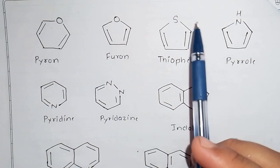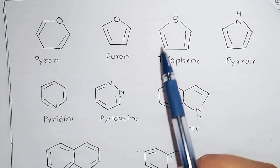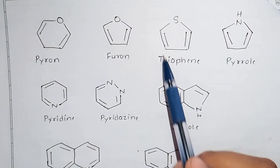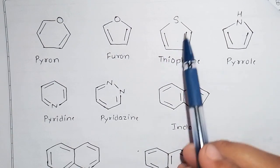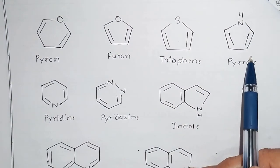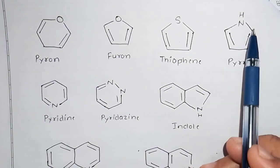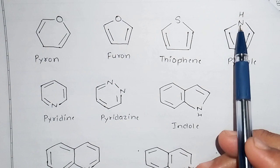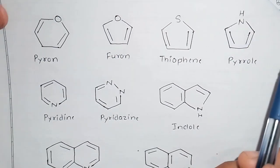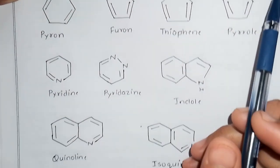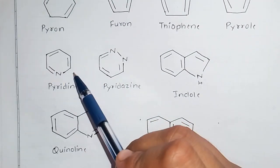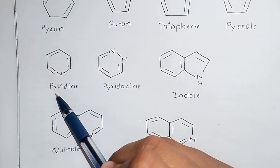Next we have thiophene. Thiophene represents a sulfur-containing ring — the 'thi' prefix represents sulfur. And next we have pyrrole, which is also a common naming for a five-membered nitrogen-containing ring. After that we have a six-membered ring containing a nitrogen compound — pyridine.